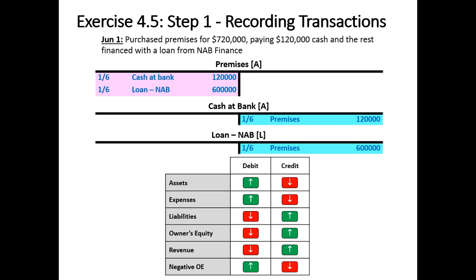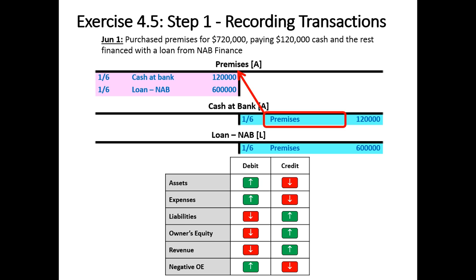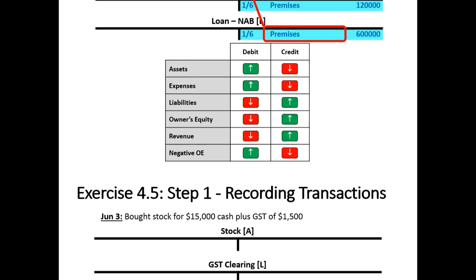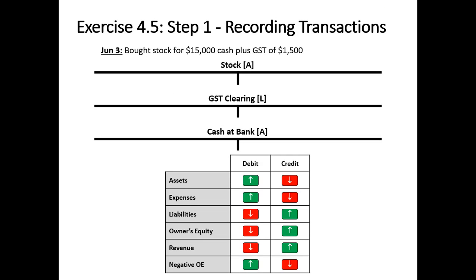We'll go to the loan account, which is a liability, and make a credit of $600,000. For our referencing: the debit will reference cash at bank on the credit side, and the credit in cash at bank will reference premises. The second debit will reference loan, and the last credit will reference premises.